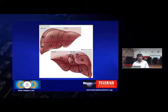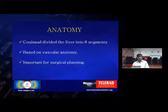We have eight segments described by Couinaud in the liver. These are mainly based on the vascular anatomy, with four segments in each lobe. Segment one is the caudate lobe, which is quite independent and has its own vascularity with blood supply directly running into the inferior vena cava. Couinaud divided the liver into eight segments based on vascular anatomy, which is very important for surgical planning.